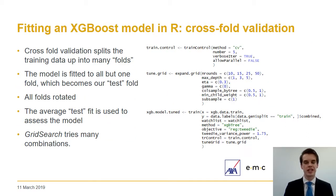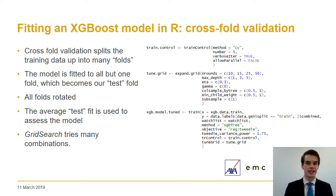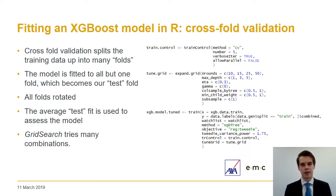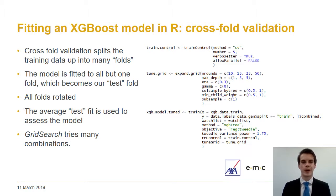Now that we've inspected our first XGBoost model, we can conclude there's opportunity to improve the parameters. There was substantial overfitting, so the number of rounds should be reduced, and other parameters could be improved too. In R there is a package called Caret which supplements the XGBoost package and makes the process of tuning much more efficient and streamlined. Caret helps in two ways: first through cross-fold validation, and second through grid search.